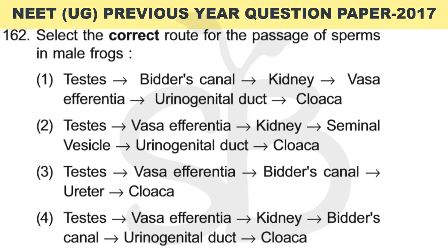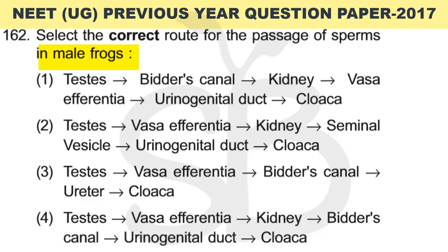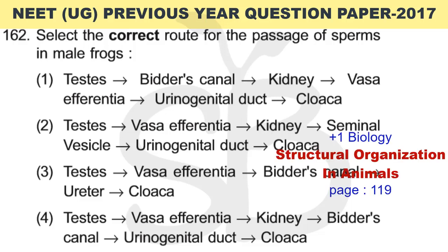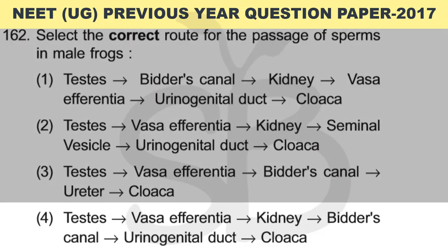Question number 162: Select the correct route for the passage of sperms in male frogs. The correct answer is option 4: testes → vasa efferentia → kidney → bidder's canal → urinogenital duct → cloaca.